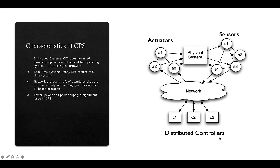Some characteristics of cyber-physical systems include the use of embedded systems — they don't need general-purpose computing or a full operating system, so often it's just firmware embedded in a chip. These systems are often real-time systems responding in fixed, often very short, lengths of time. They have a range of networking protocols that are not particularly secure, and are only just moving to IP-based protocols, meaning proprietary systems are still common within CPS.